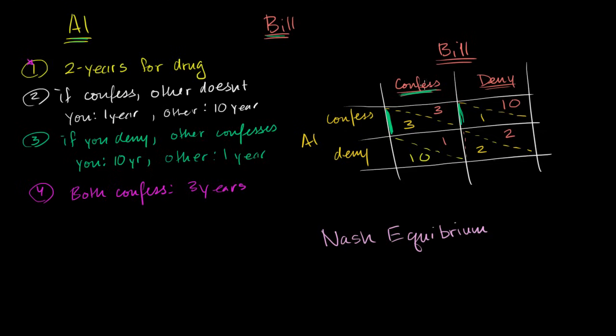And so regardless of whether Bill confesses or denies, the optimal choice for Al to pick, taking into account Bill's choices, is to confess. If Bill confesses, Al's better off confessing. If Bill denies, Al's better off confessing.